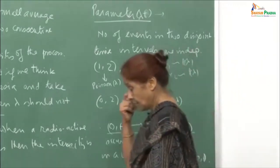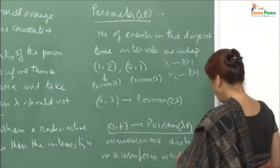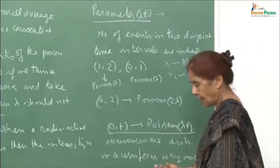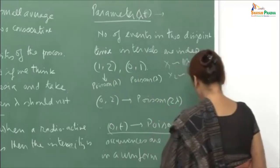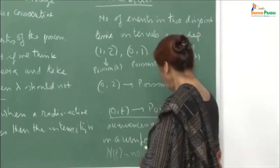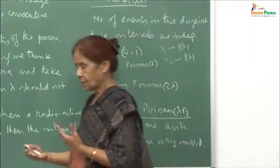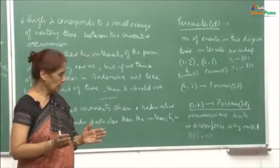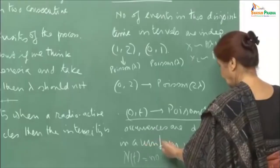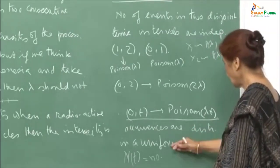Since we are talking of stationary increments, the arrivals over time (0,t) are distributed in a uniform way. When counting N(t) — the number of arrivals in the span of time 0 to t — the process is modeled so that arrivals can occur anywhere, and the best way to model this is that arrivals are uniform in the interval (0, t).